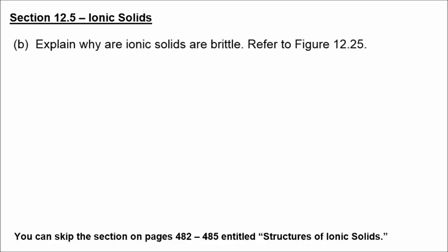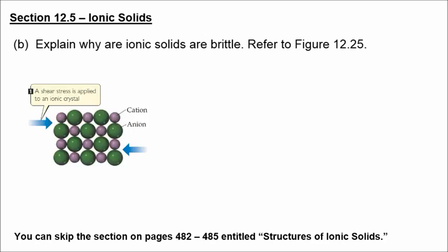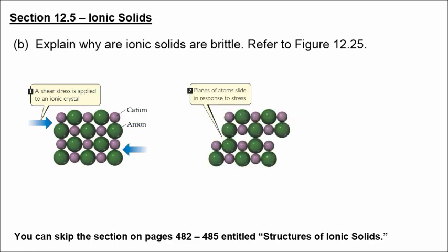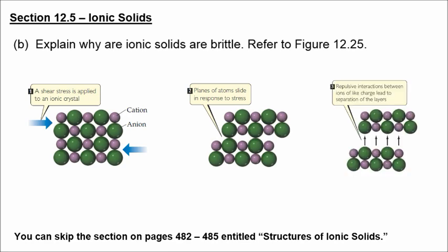Why are ionic solids brittle? Refer to figure 12.25. Here we have a network of positive and negative ions. A stress is applied to the ionic crystal, and what that does is that stress causes the atoms to slide, and when they do slide, now you have negative ions lined up on top of negative ions, and positive on top of positive. That creates repulsion, and that separates the layers. So that's why ionic solids are brittle and sort of flake apart, or can be cleaved along well-defined planes. We're going to skip the section on pages 482 to 485 entitled Structures of Ionic Solids.